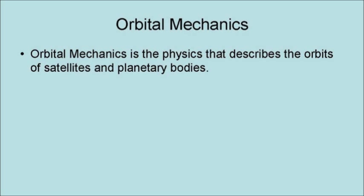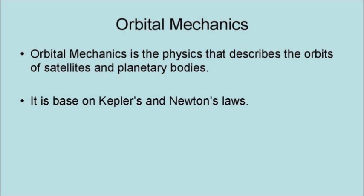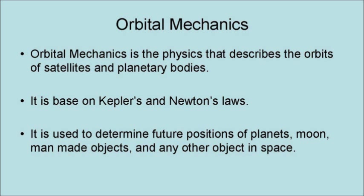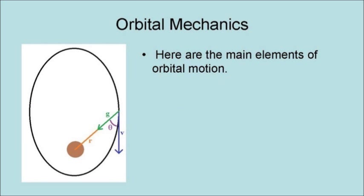Orbital mechanics is the physics that describes the orbits of satellites and planetary bodies. It is ultimately based on Kepler's and Newton's laws. It is used to determine future positions of planets, moons, man-made objects, and any other object in space.